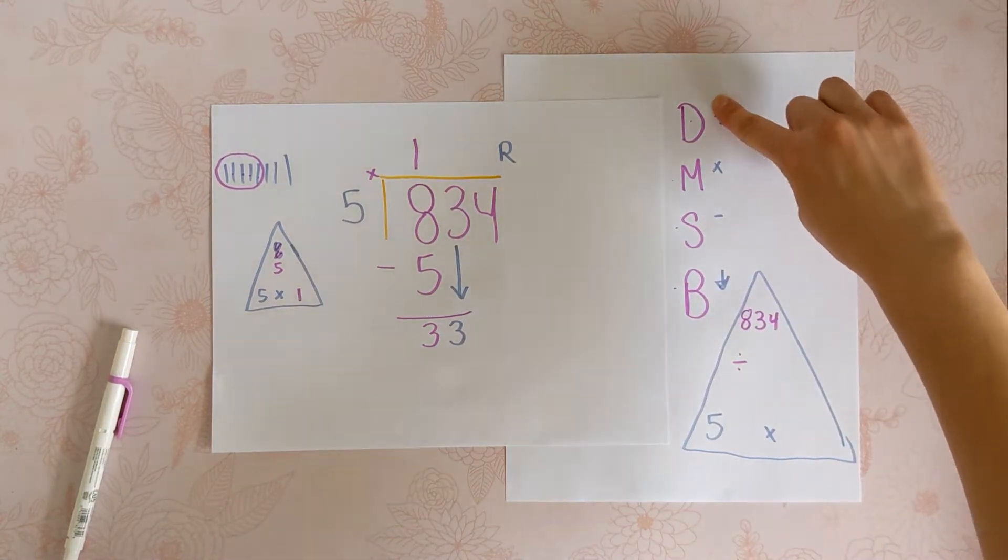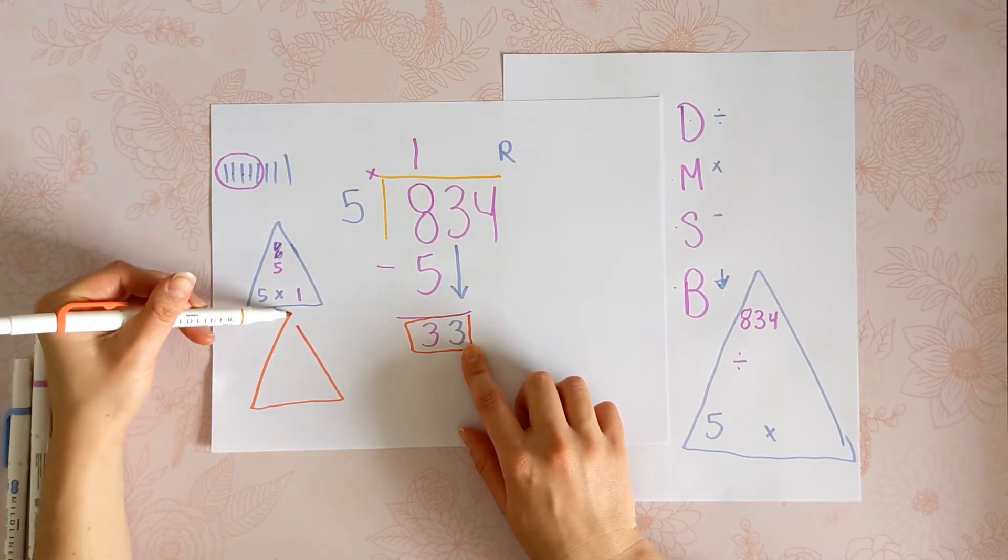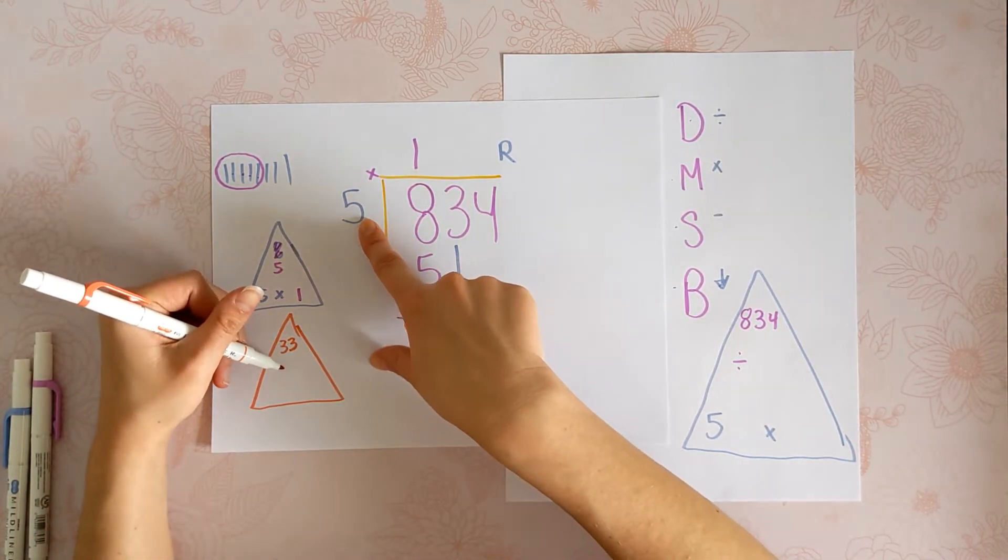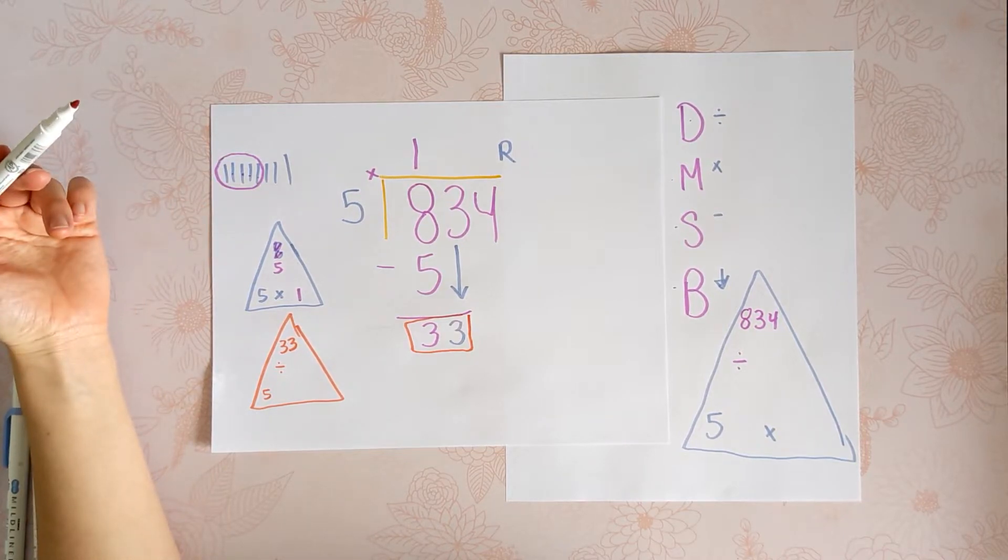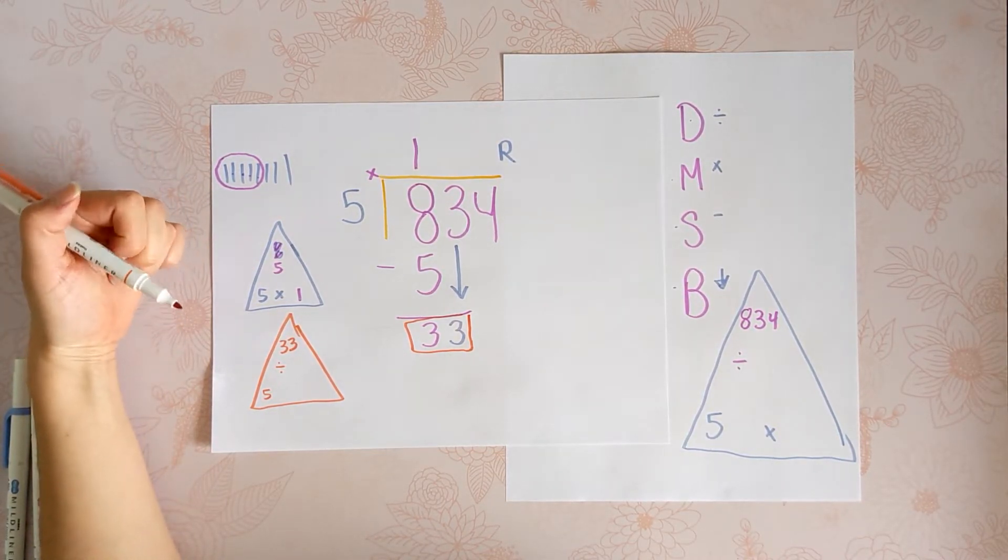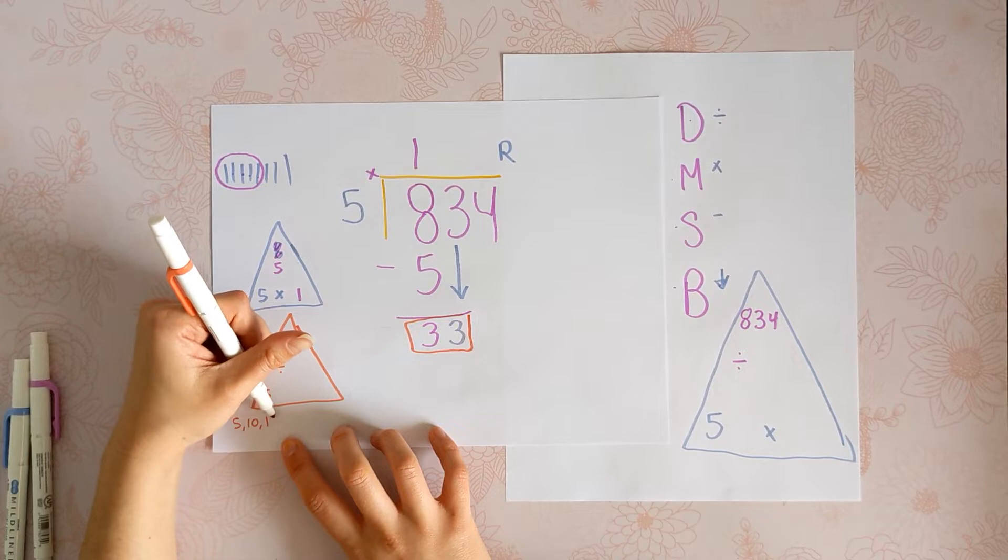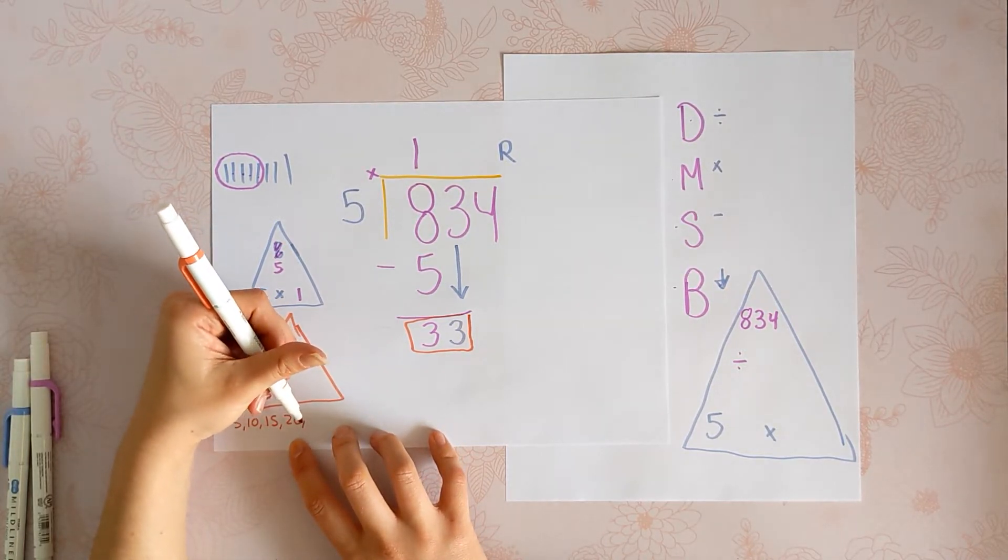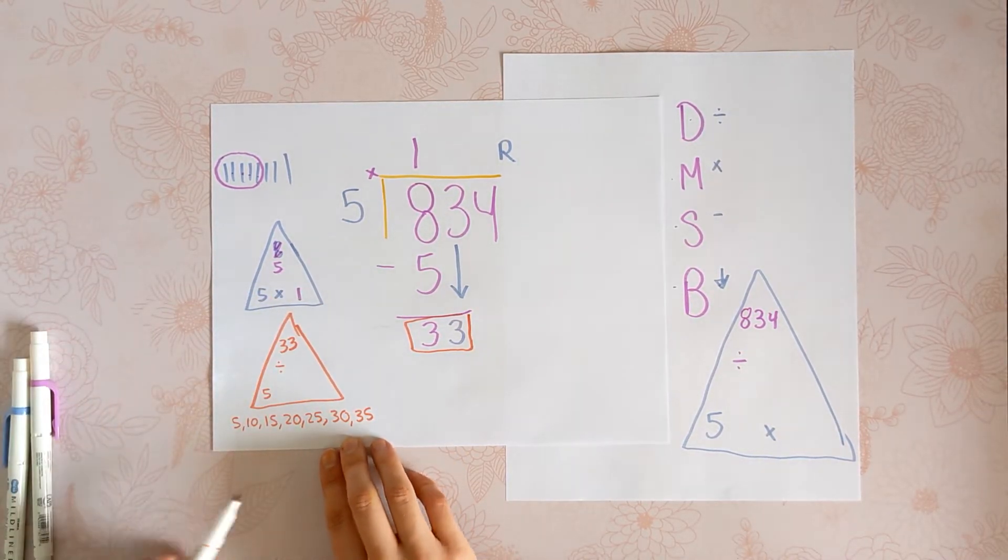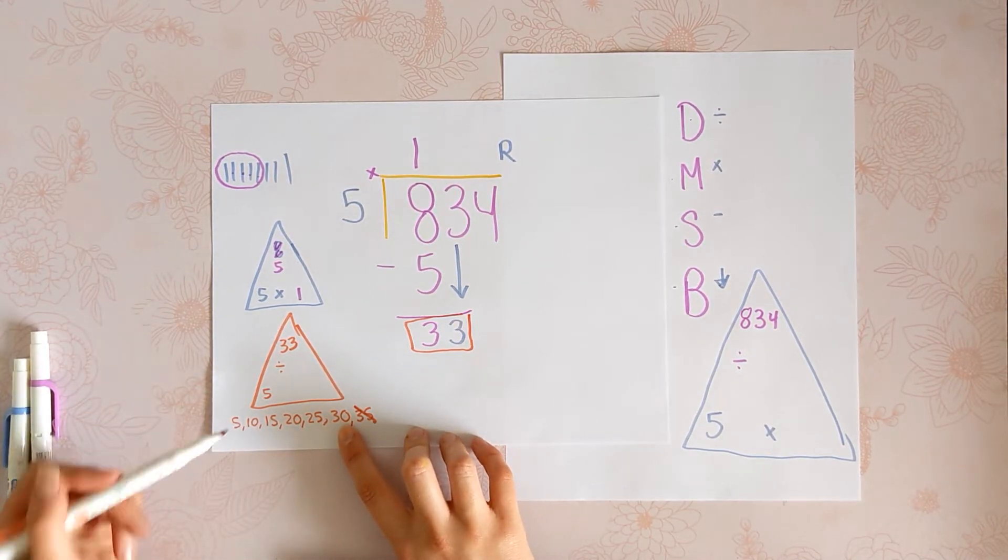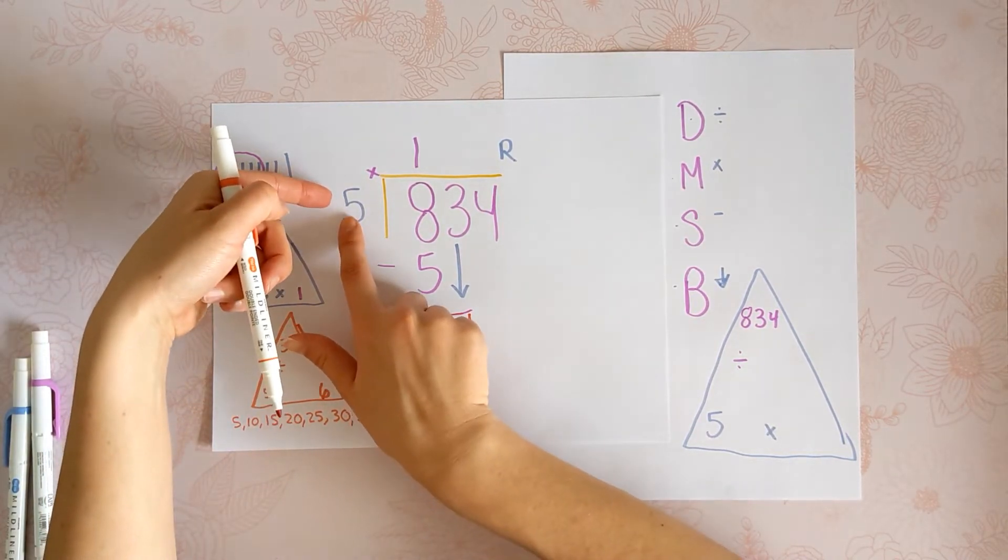The next step now is to divide again. So we're going to take this 33 and we're going to do 33 divided by 5. In other words, how many 5s fit into 33? So you could draw 33 marks and make groups of 5, or you can just skip count your 5s until you get close without going over. 5, 10, 15, 20, 25, 30, 35. So went over. 30 is the closest you can get. 1, 2, 3, 4, 5, 6. 5 times 6. 33 divided by 5 is 6.